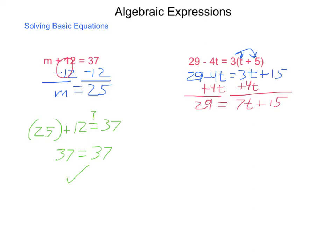At which point, I now invoke SADMEG. Do I see any subtraction or addition? The answer is yes. So, I am going to subtract 15 from both sides of my equal sign using the subtraction property of equality. I am going to end up with 14 equals 7T. Now, I have multiplication, so using the division property of equality, I am going to divide both sides by 7. And I come out with 2 is equal to T.